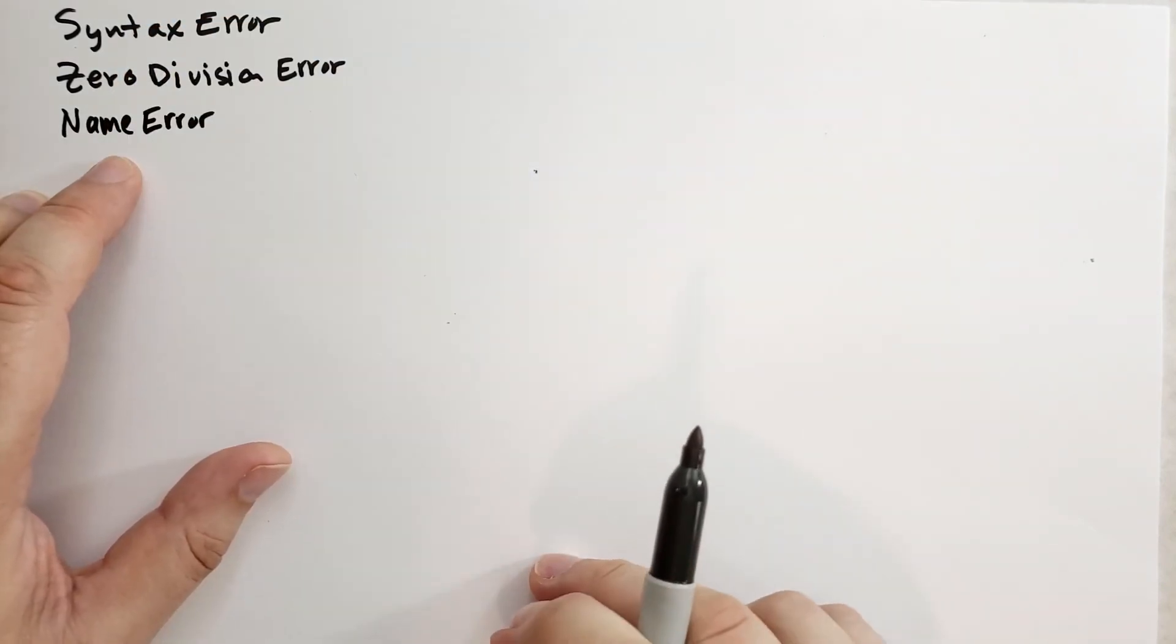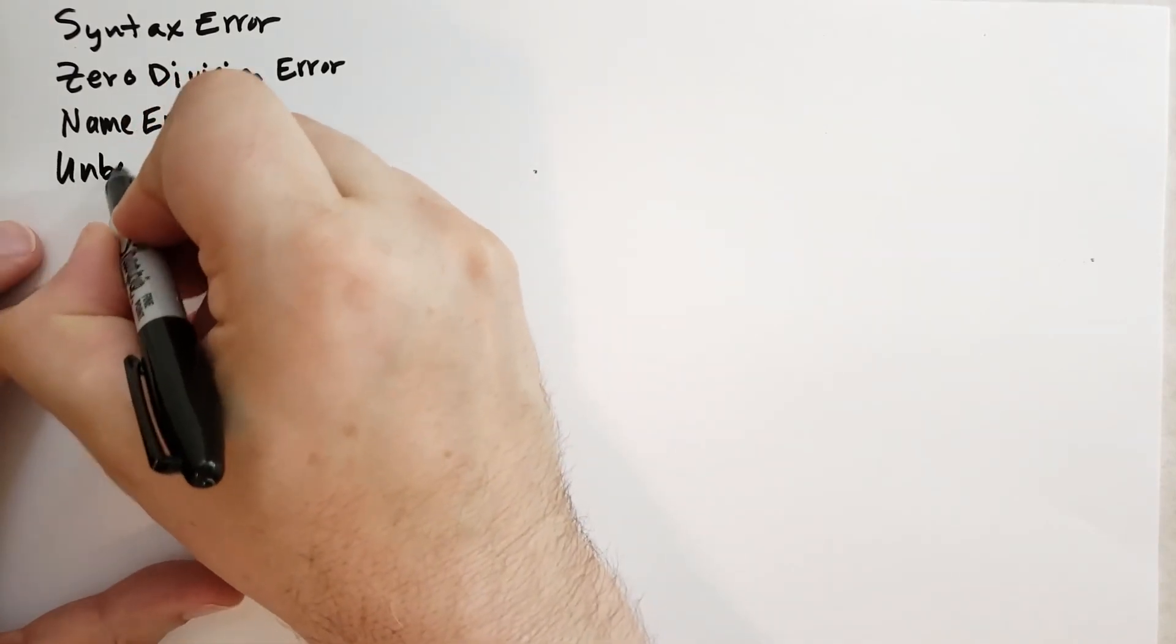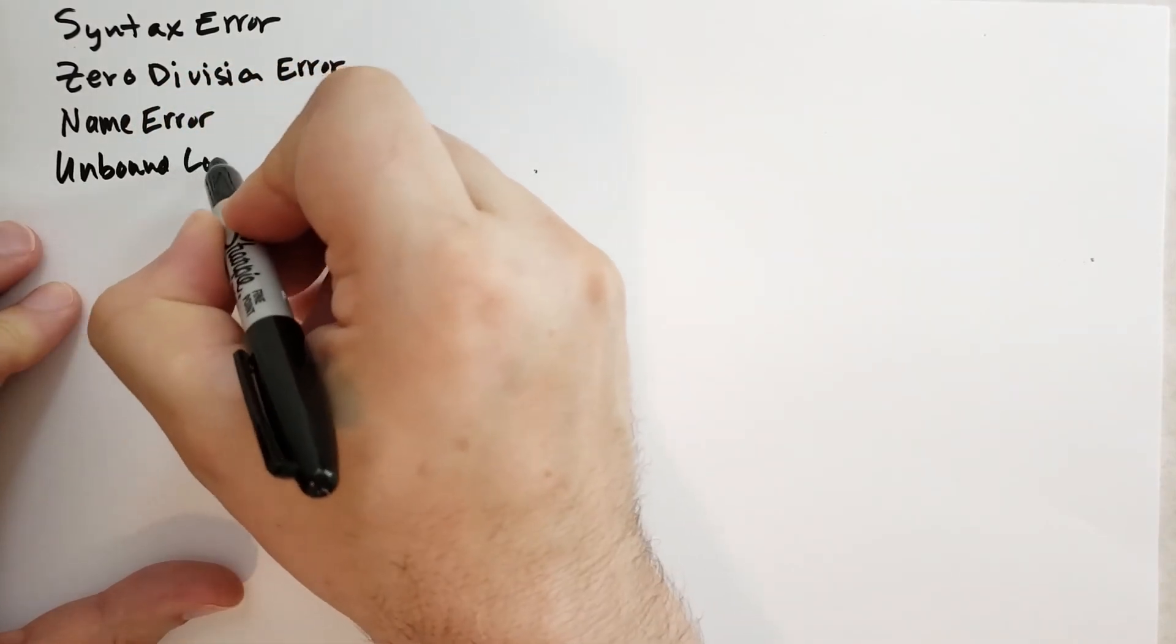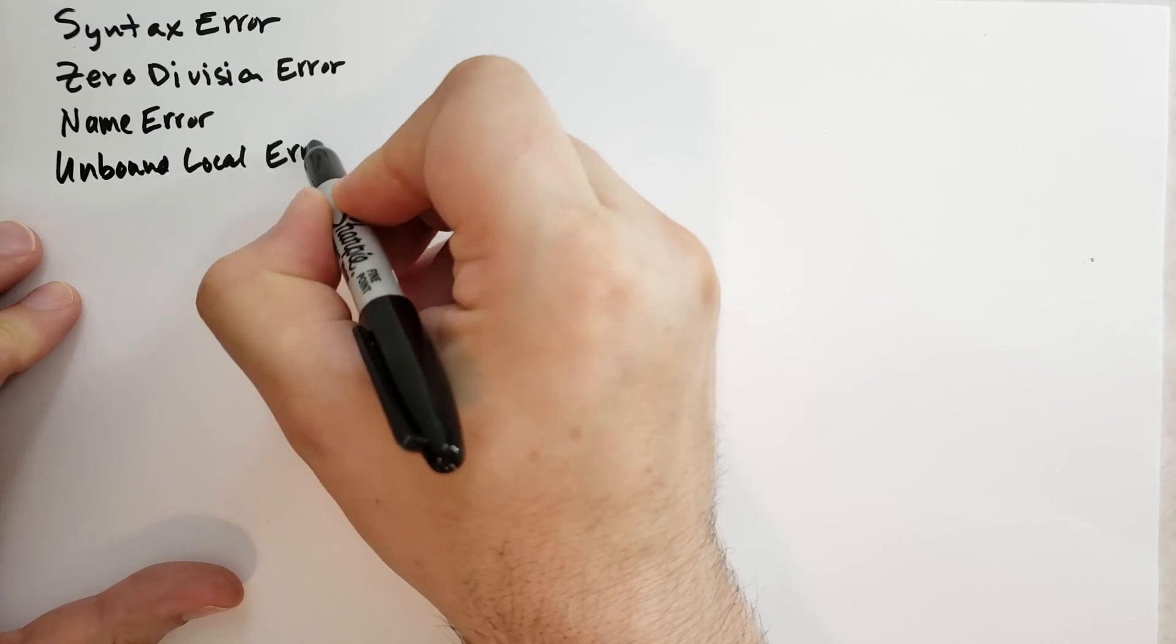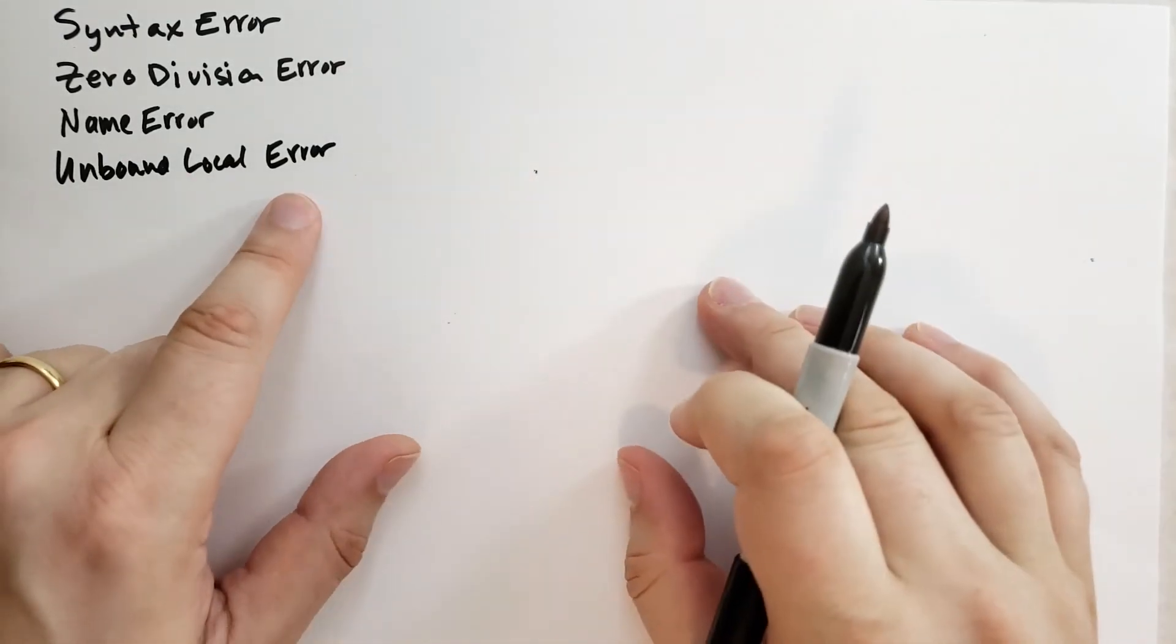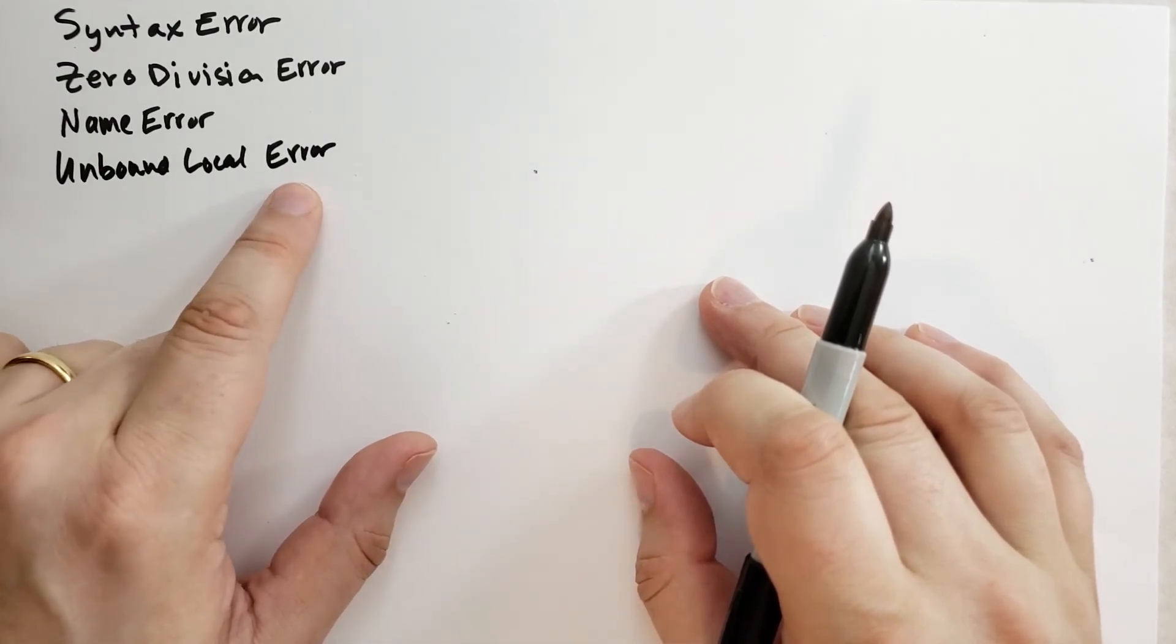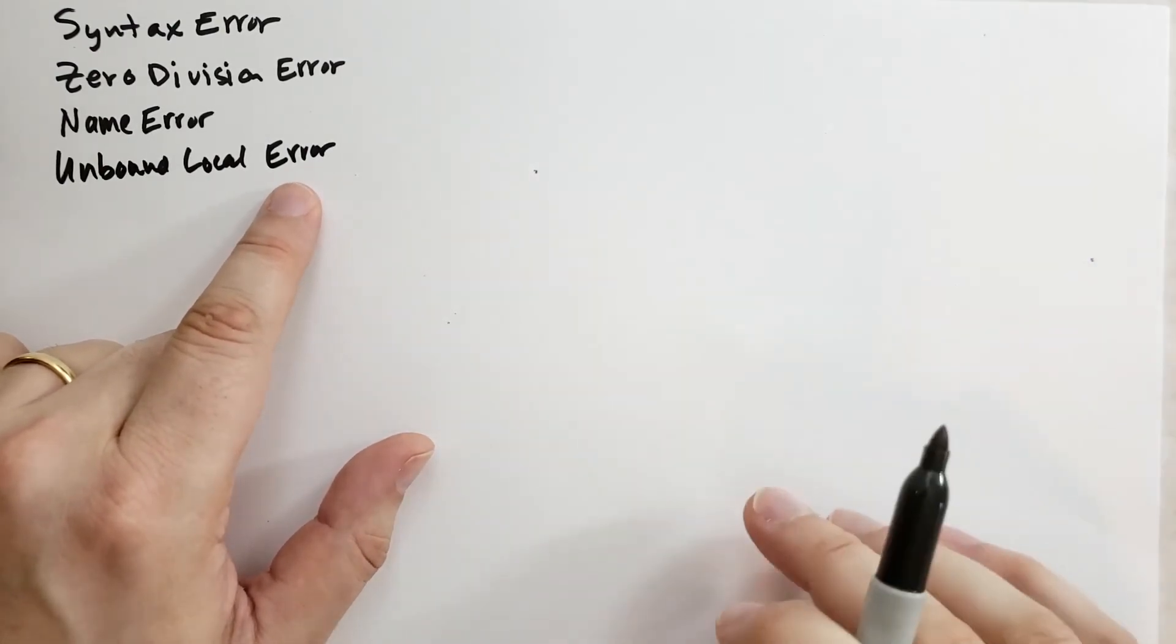There's name error. This is raised if you try to access a variable before defining it. There's unbound local error. It's an exotic error. It's raised when you try to assign to a variable that is in the global or non-local namespace and you didn't use the global or non-local statements to declare that.